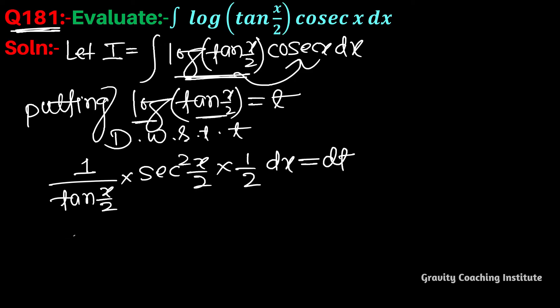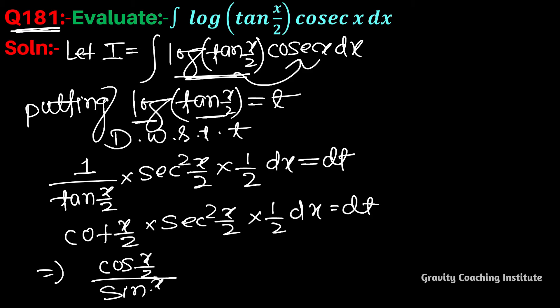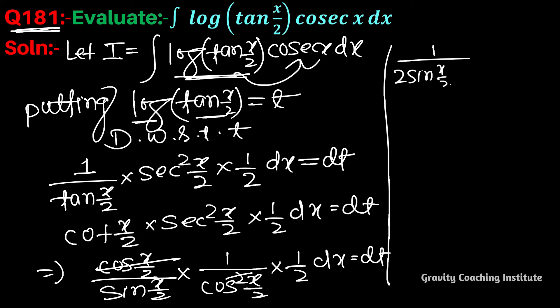Now, 1/tan is cot, which equals cos(x/2)/sin(x/2), and sec²(x/2) equals 1/cos²(x/2). So cos² cancels, giving us 1/(2sin(x/2)cos(x/2)) dx = dt.